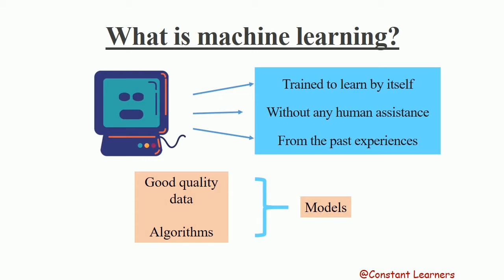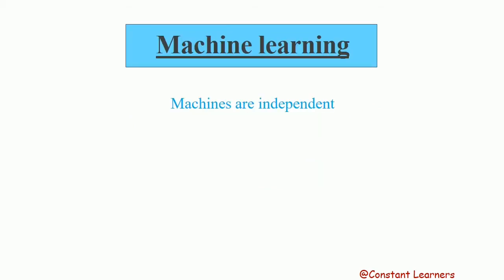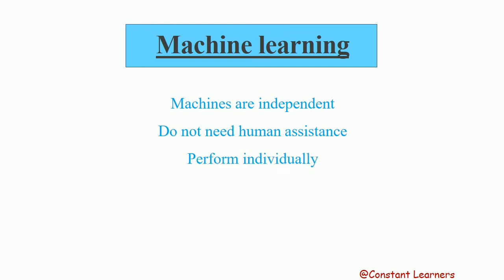If you haven't watched that video already, please do so before continuing, because in this video we are discussing the types of machine learning. Hello learners and welcome to Constant Learners. These machines are independent — they do not need human assistance. They perform individually and keep on learning and improving, just like humans.